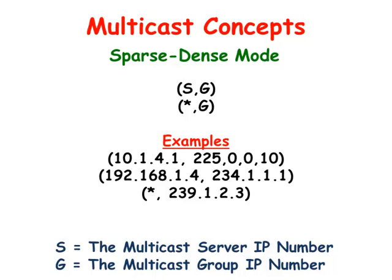The multicast routing table is different from the unicast routing table. The table shows the unicast IP address of the multicast server followed by the multicast IP address that the server is using, encompassed by parentheses. If the first part of the table has a star in it, it means that the route represents the shared tree rooted at the rendezvous point. The star is simply a placeholder to indicate all sources.